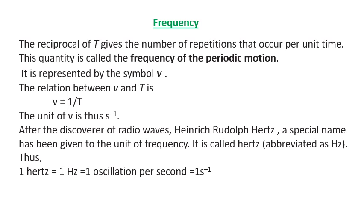After the discovery of radio waves, Mr. Hertz, a special name has been given to the unit of frequency and is called Hertz, abbreviated as Hz. Thus 1 Hertz is 1 oscillation per second.